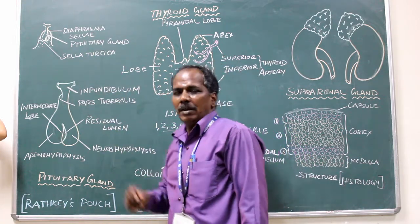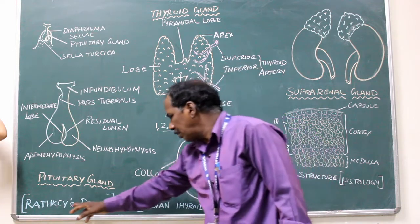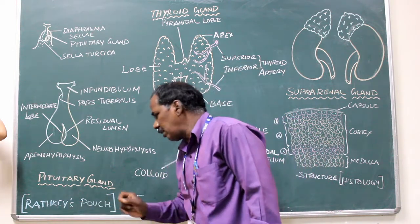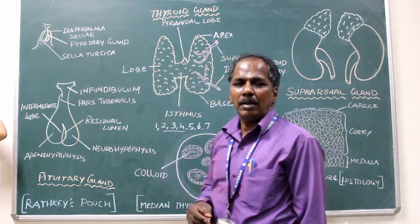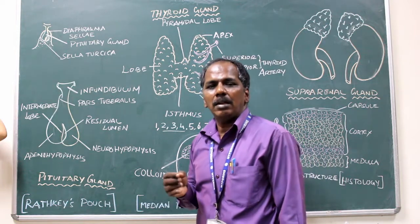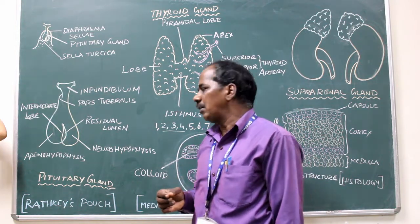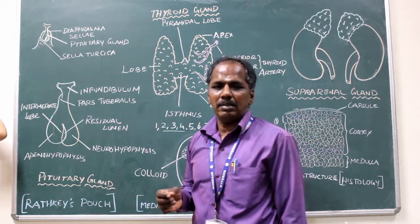Development: the pituitary gland develops from Rathke's pouch. Blood supply: it is supplied by superior and inferior hypophysial arteries.